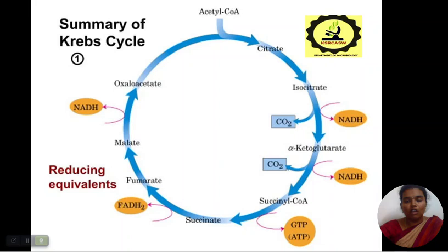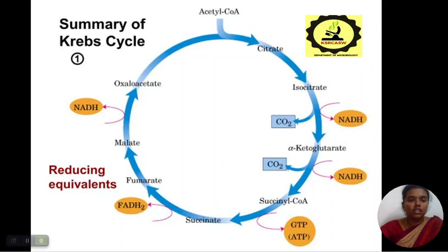This is the summary of the Krebs cycle. Acetyl-CoA gives citrate; citrate gives isocitrate; isocitrate gives alpha-ketoglutarate; alpha-ketoglutarate gives succinyl-CoA; succinyl-CoA gives succinate; succinate gives fumarate; fumarate gives malate; and malate gives oxaloacetate. This completes the Krebs cycle.